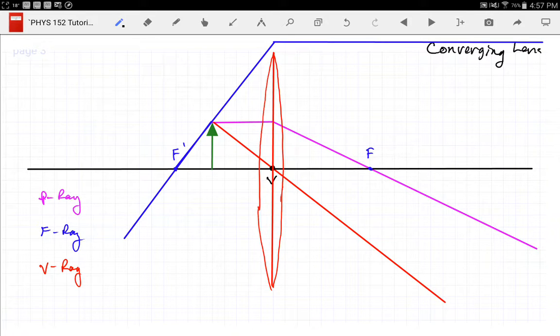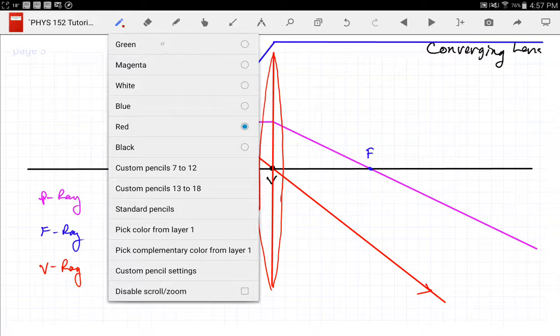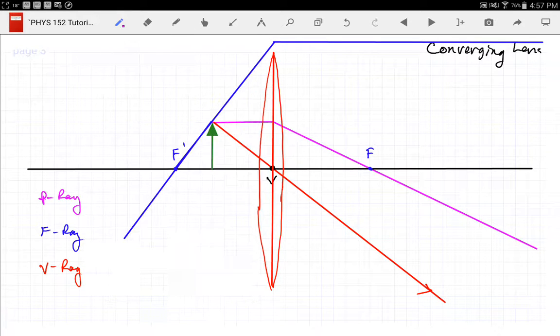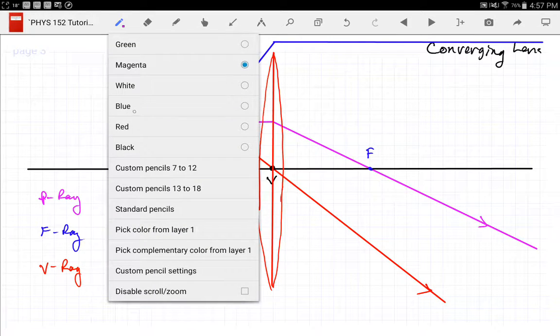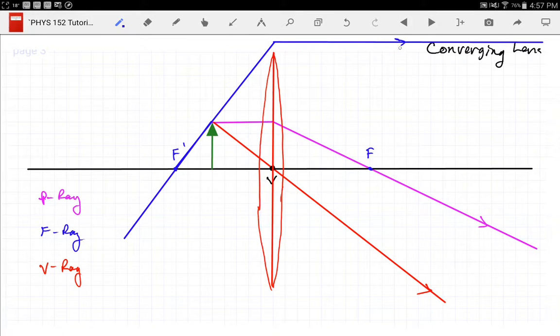Okay, so these three exit rays, if we draw arrows on them, we see that these three exit rays never meet. So what is a student to do when they never meet? You take extrapolations.